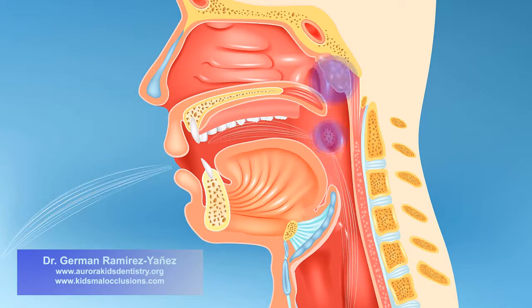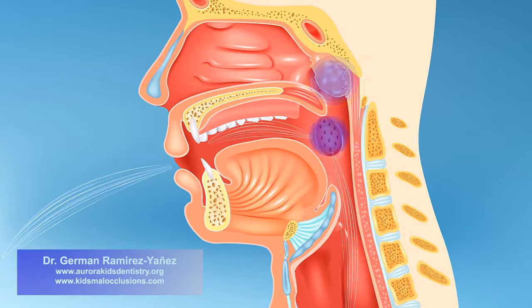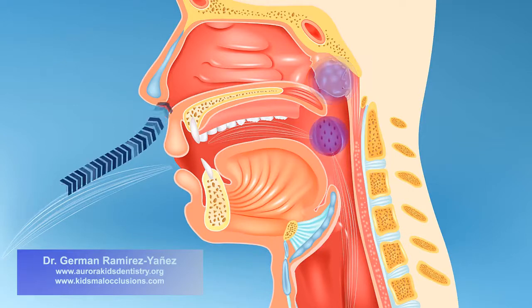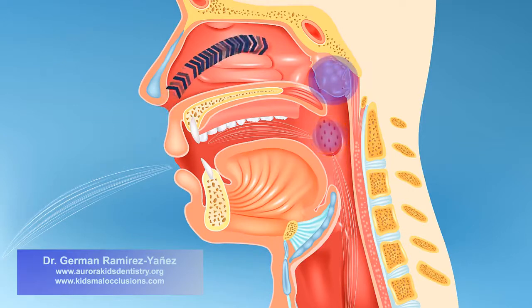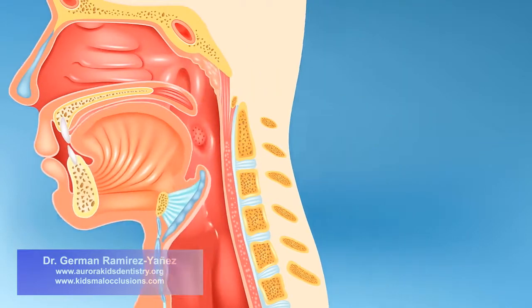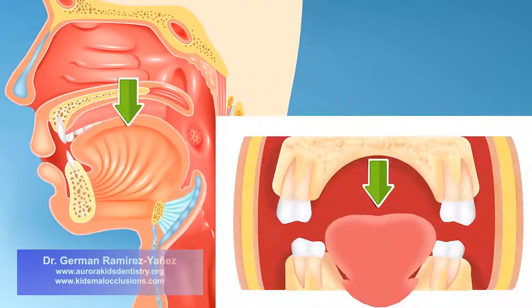As a consequence, that lymphoid tissue overgrows, occupying a large volume of your throat. That makes nasal breathing more difficult, and you develop a habit of breathing through your mouth.